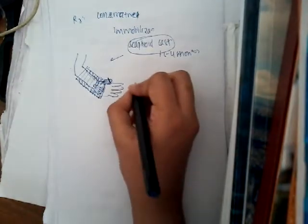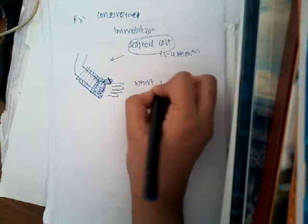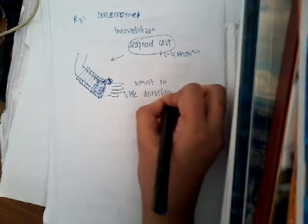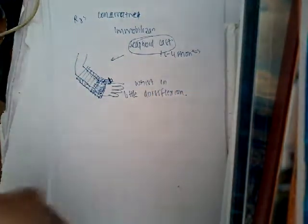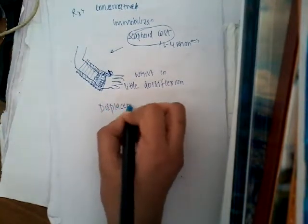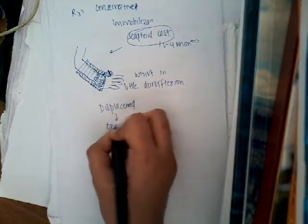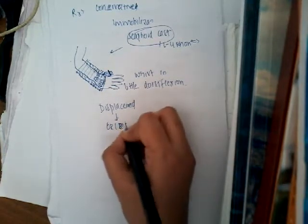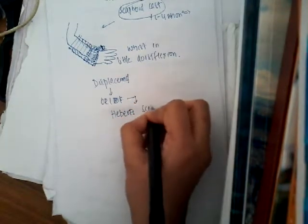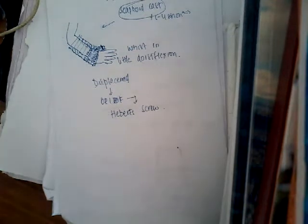In this scaphoid cast, the wrist is maintained in slight dorsiflexion — not complete, just a little dorsiflexion. If the fracture is widely displaced, then you will have to do open reduction and internal fixation. In this technique, you can use a special screw called the Herbert screw.